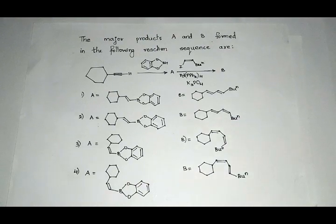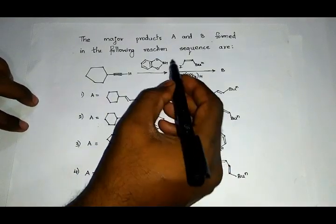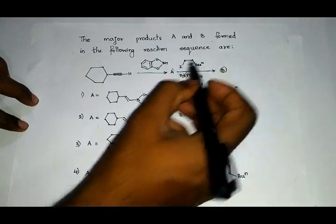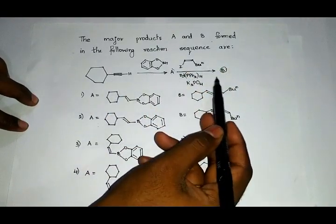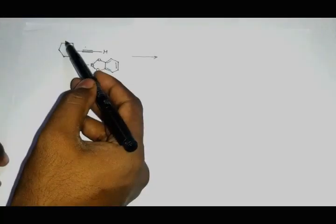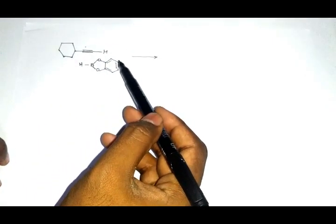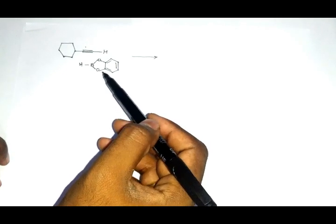Hey guys, in this video we will solve a question from CSIR NET June 2012. The major products A and B formed in the following reaction sequence are: these are the reactants. The reaction sequence involves the preparation of vinyl boronic acid followed by Suzuki-Miyaura coupling reaction.